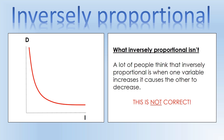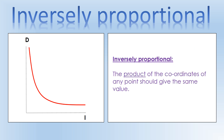So what is inversely proportional actually? It's when the product - and product means you multiply - so the product of the coordinates of any point on the graph gives the same value. Every point on the graph has an x and y coordinate, and we multiply the x and y coordinate. The product of the coordinates of any point should give the same value.